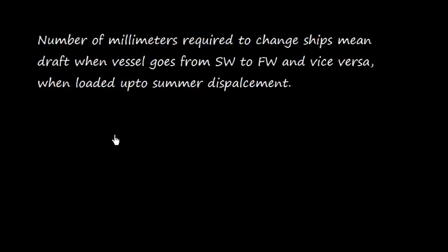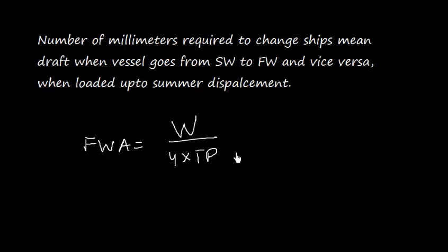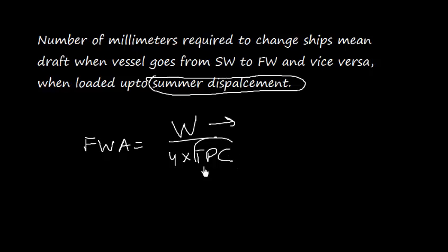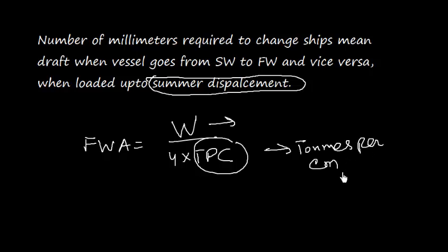The fresh water allowance is given by the formula: FWA = W divided by (4 × TPC), where W is the summer displacement and TPC is tons per centimeter. The fresh water allowance is expressed in millimeters.